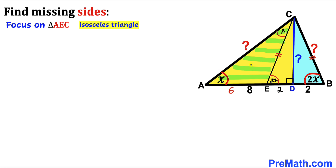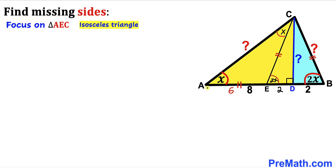Now let's focus on triangle AEC. We can see it is an isosceles triangle since angle CAE is congruent to angle ACE, both equal to x. Therefore side AE equals side CE. Since AE is 6, side CE is 6 units as well. And since CE equals BC, side BC is also 6 units.